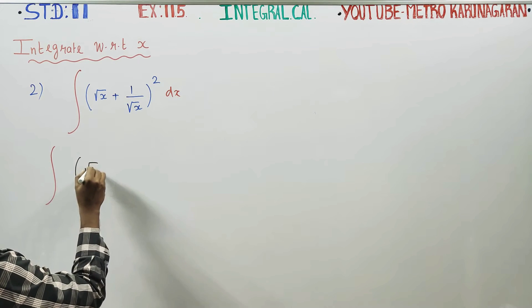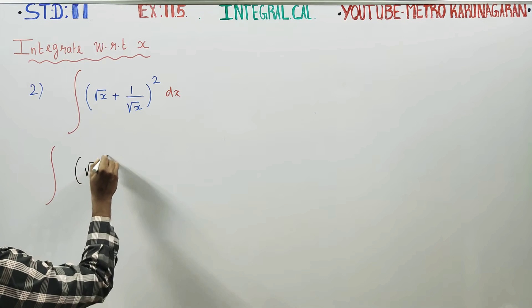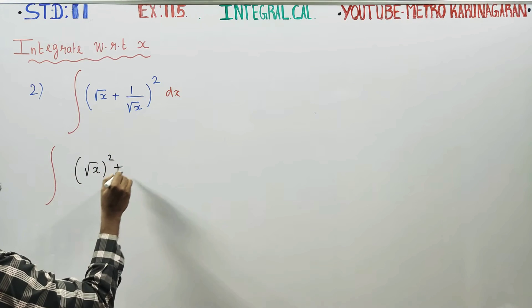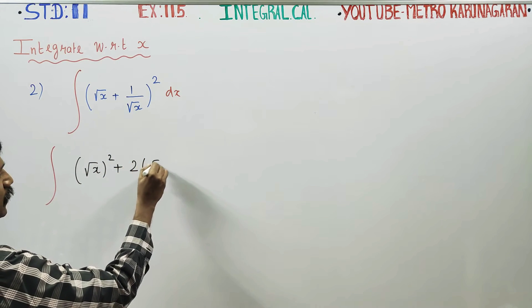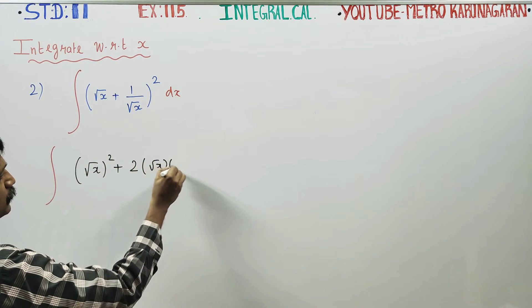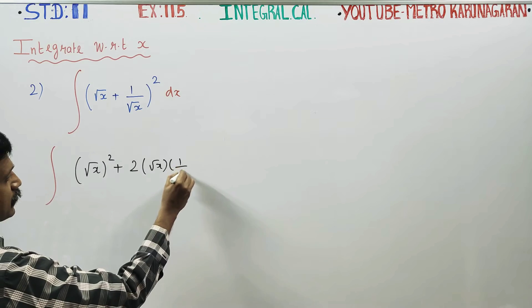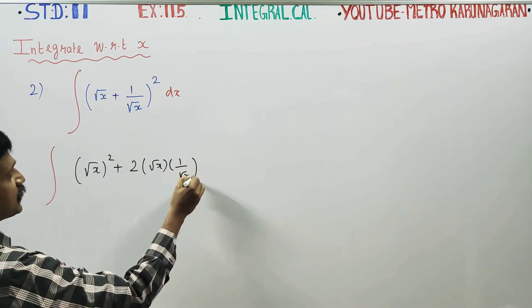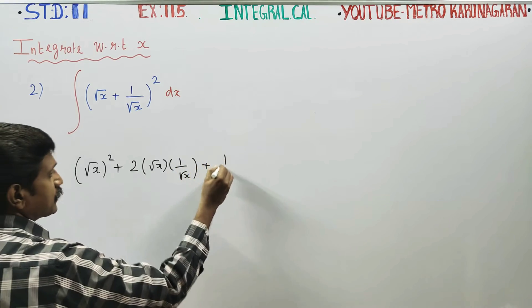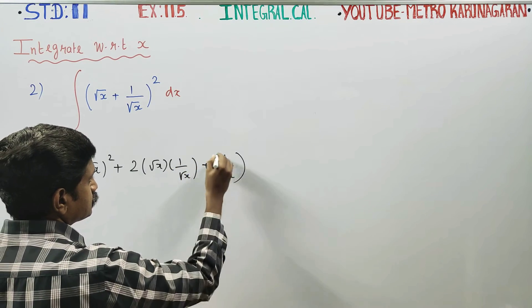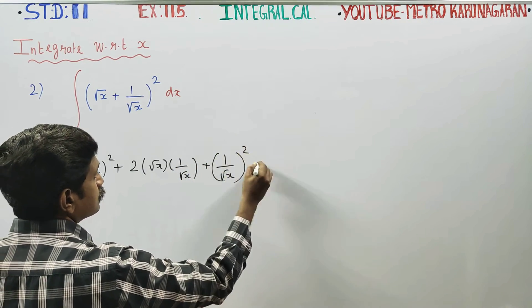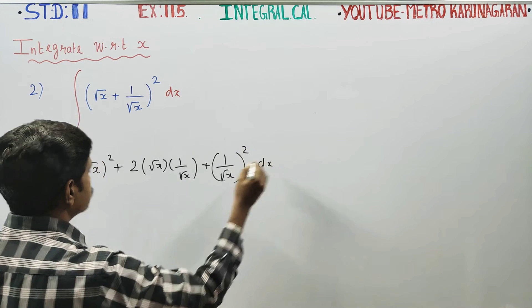The formula goes like this: a² plus 2ab plus b², dx.